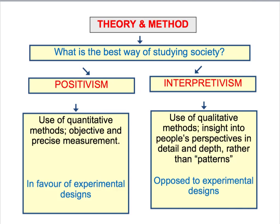In previous screencasts I talked about two different approaches called positivism and interpretivism. Positivism is the idea that sociology should follow the principles and logic of the natural sciences, and it would be an approach in favour of experimental designs in sociological research. Interpretivism, on the other hand, rejects the idea that sociology should be modelled on the natural sciences, and an interpretivist would argue that experiments are not a useful method in sociology at all.